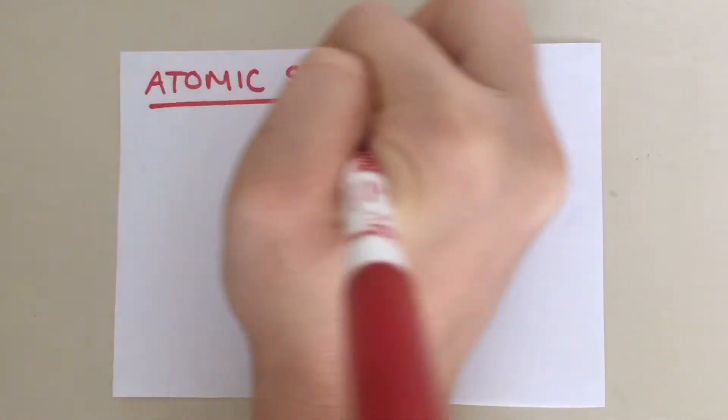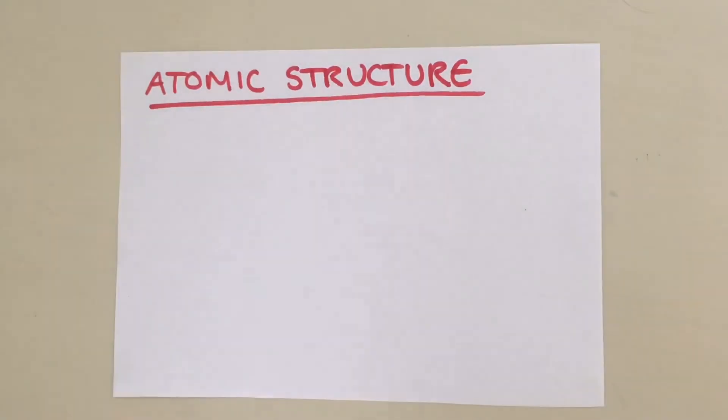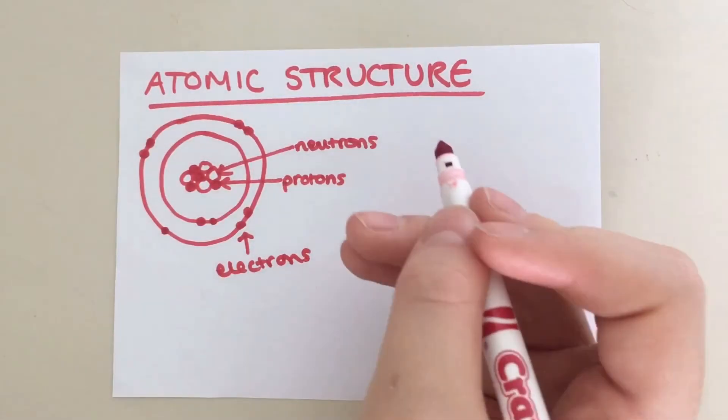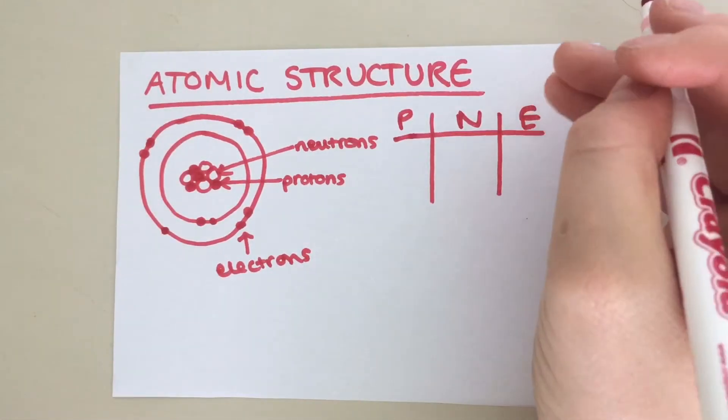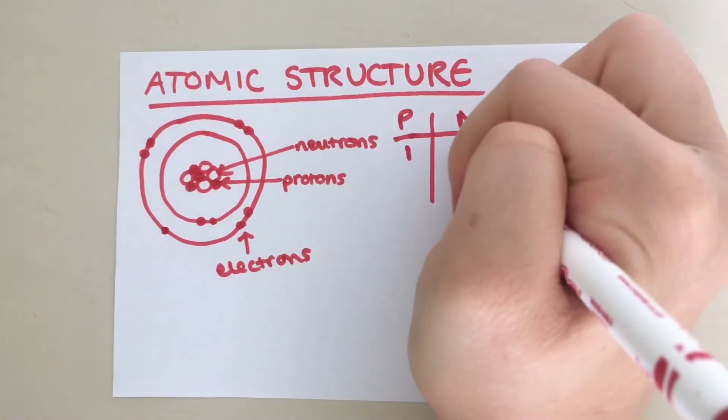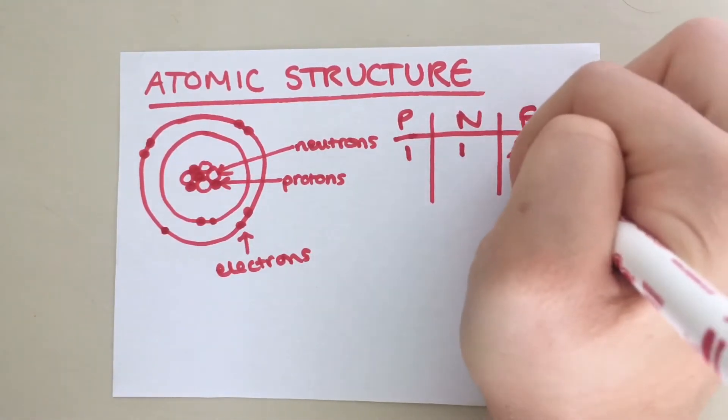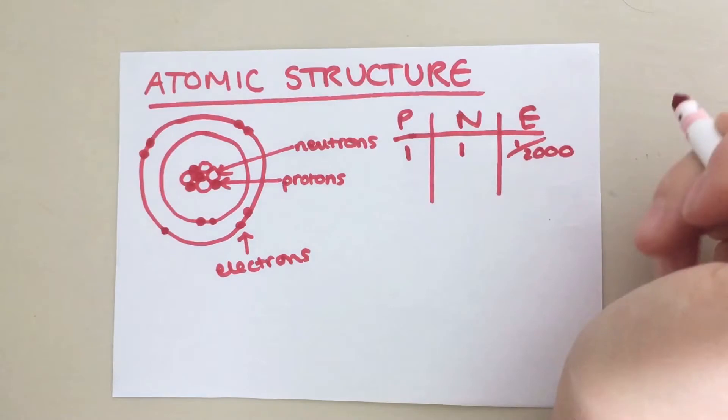Let's start by looking at atomic structure. Protons and neutrons are the subatomic particles found in the nucleus of an atom. The electrons orbit the nucleus in shells with different energy levels. Protons are known to have a relative mass of one, same with neutrons. However, electrons have a relative mass of one over two thousand. They are very light compared to protons and neutrons.